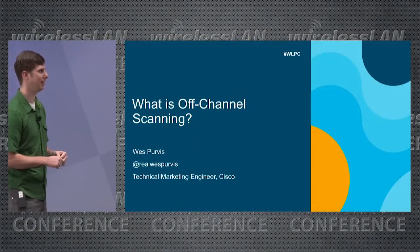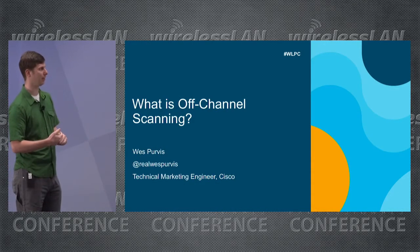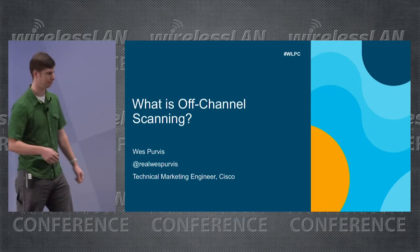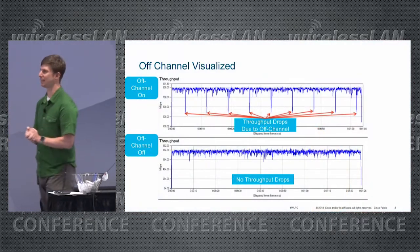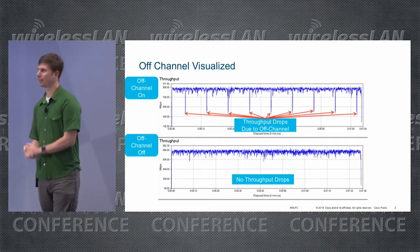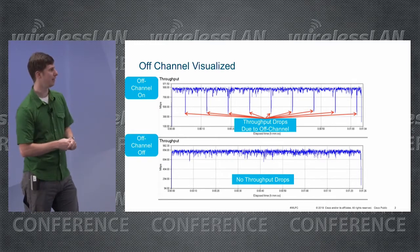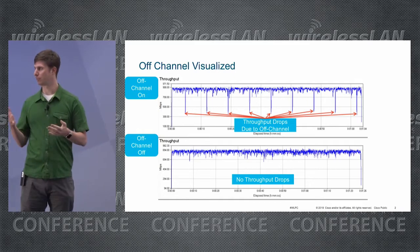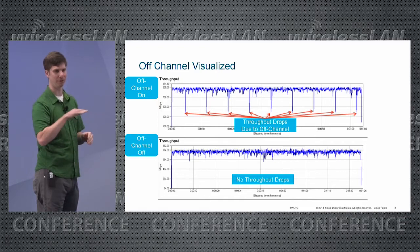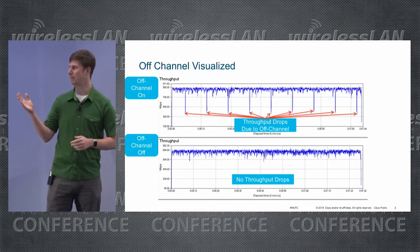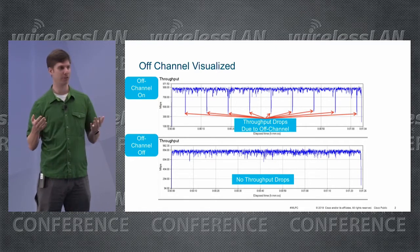Hello everyone, I'm Wes again and now I want to talk about off-channel scanning, which is a topic I think that often gets overlooked but it's an important one nonetheless. I'm an access point guy, I like looking at the RF, so let's start with looking at some throughput graphs. For any of you that have ever done a throughput test or an iPerf test, you've noticed every so often you get a dip in throughput — that dip is actually the AP going off-channel.